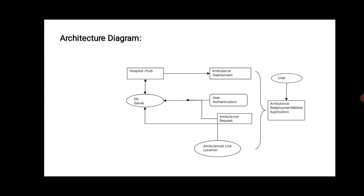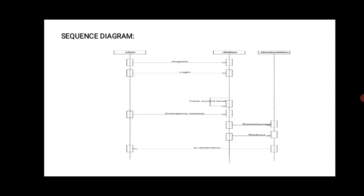Here is a sequence diagram between user and station. First, register the station, then log in to the station. The station will track the current location. The emergency request from the user will be tracked, and the ambulance will be redeployed and directed to the nearby station.